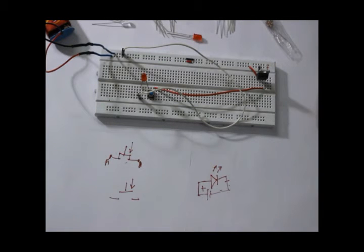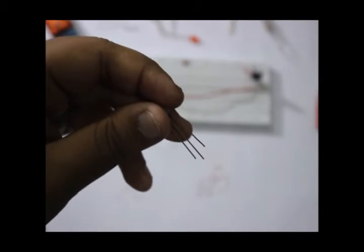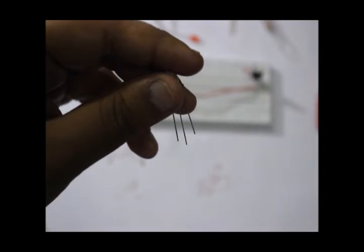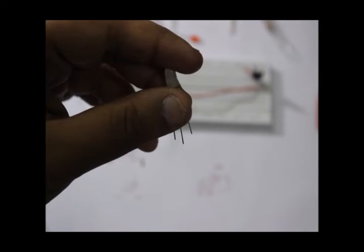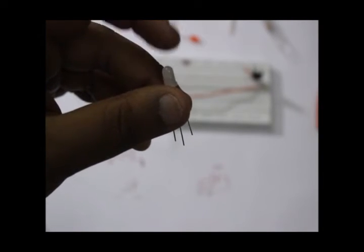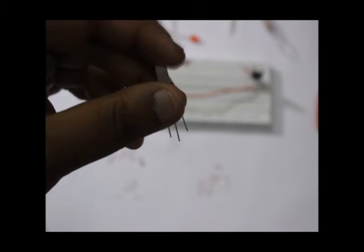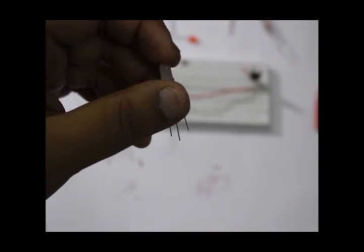Now I want to show you something better with the bicolor LED. This has three terminals, you can look. One longer and two shorter. The longer terminal is the common positive terminal and the other two - one cathode for red color and another cathode is for green color. Let me make a circuit for this to demonstrate.